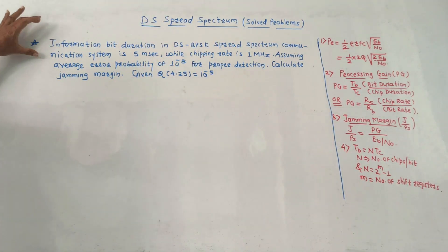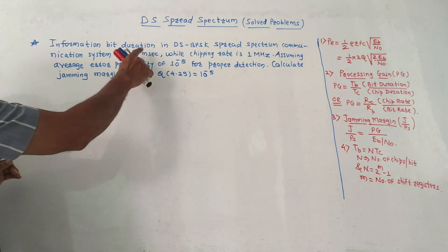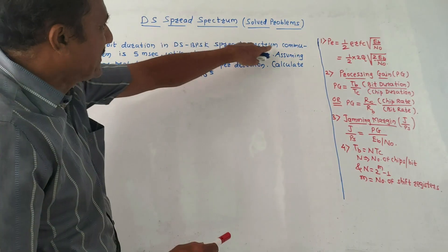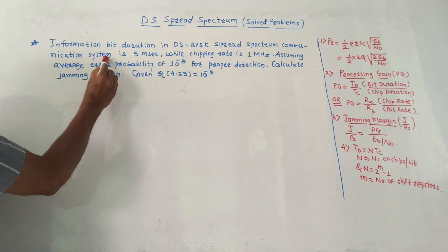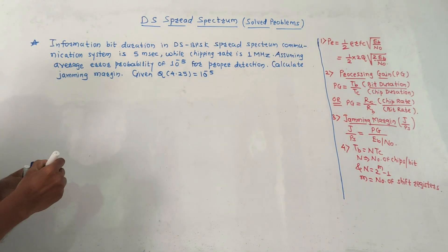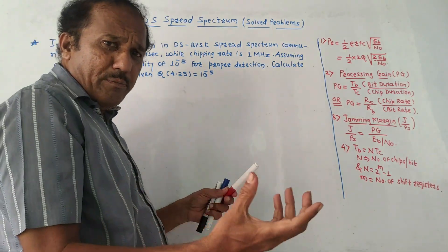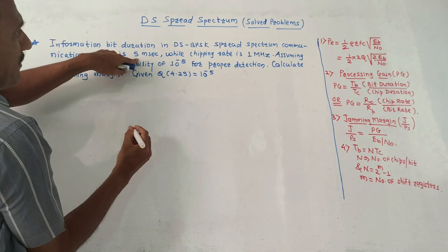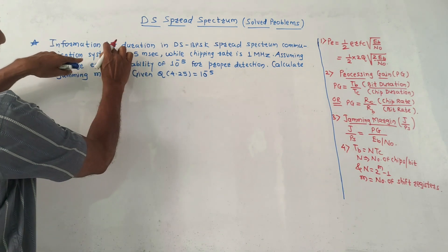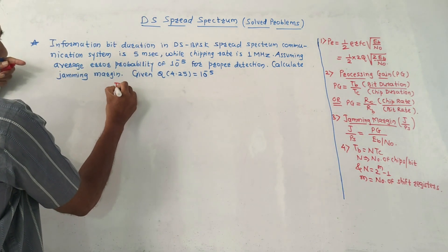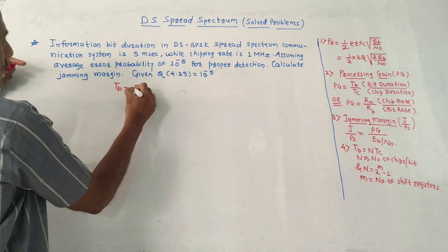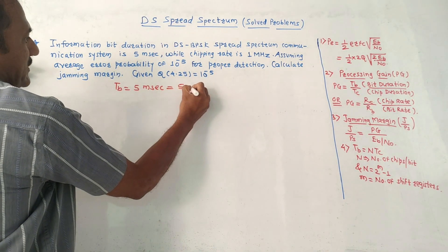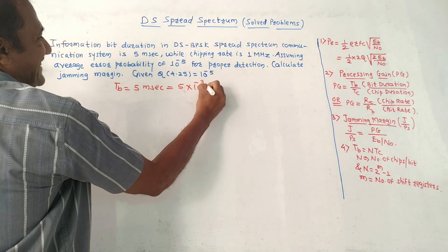N is given as 2 raised to M minus 1, where M is the number of chip registers. Now let us solve the numerical. First problem: information bit duration in DS BPSK spread spectrum communication system is 5 milliseconds. While reading the numerical, you should note down the given values. So the value of bit duration TB is equal to 5 milliseconds, that is 5 into 10 raised to minus 3 seconds.